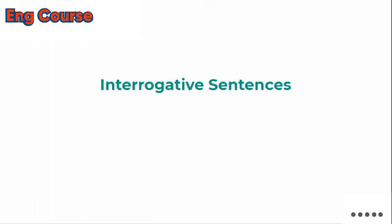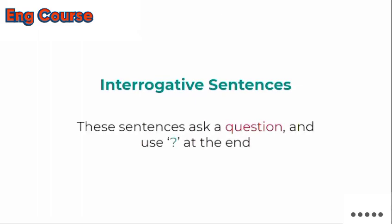One important thing: all these question words are interrogative words. Note that the correct term is 'interrogative' — spelled I-N-T-E-R-R-O-G-A-T-I-V-E — not 'interrogate'. Now, the second type of sentence is interrogative sentences. These sentences ask questions, and a question mark is used at the end.